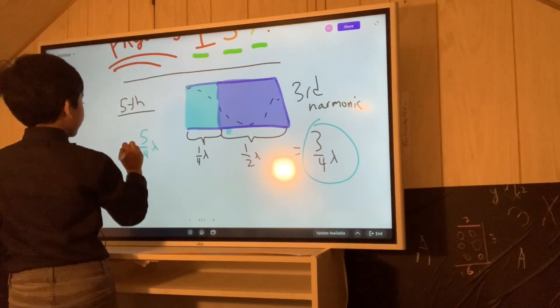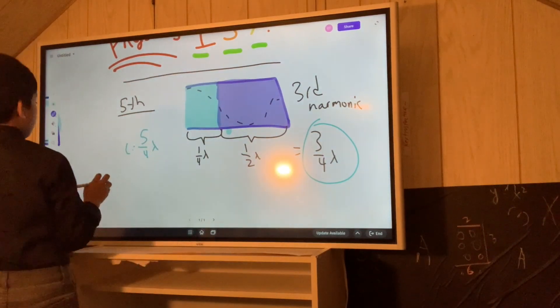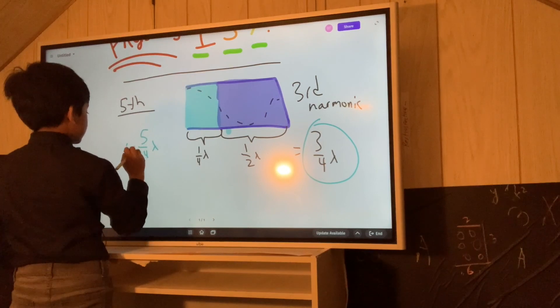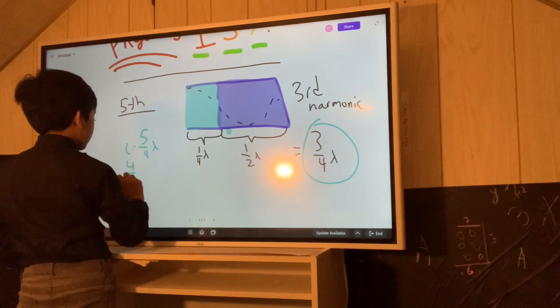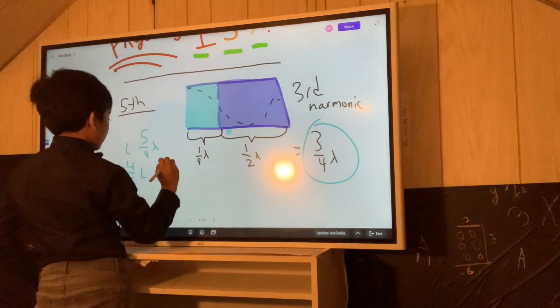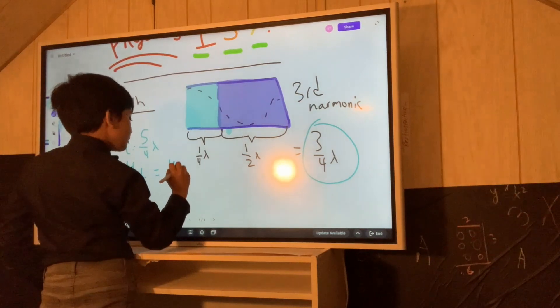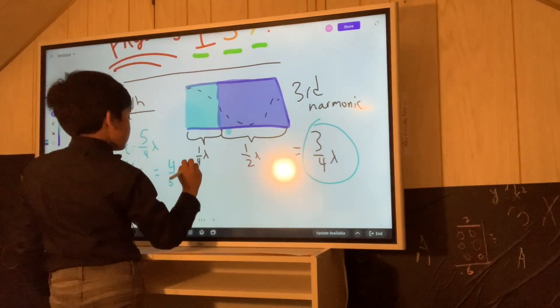So, L is five-fourths lambda. But, let's say you do the math and you multiply both sides by four over five. Five-fourths lambda...